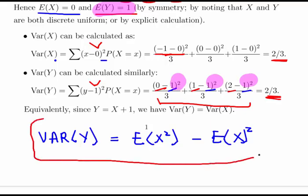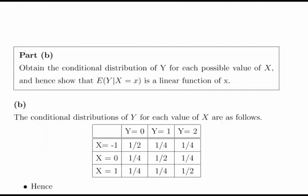That's just a different approach to the one I would usually take, but it's good to know in case you see it in the textbook. Next, we obtain the conditional distribution of Y for each possible value of X, and hence show that the expected value of Y given X equals some particular value is a linear function of X. The conditional distributions of Y for each value of X are as follows.